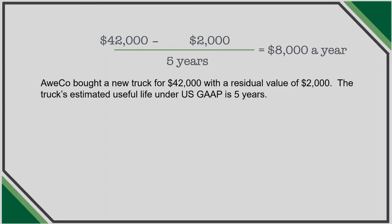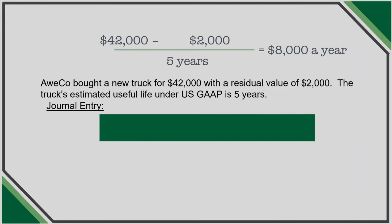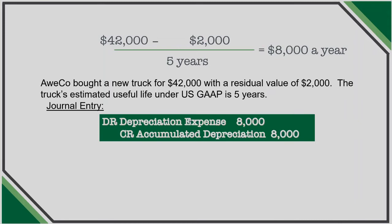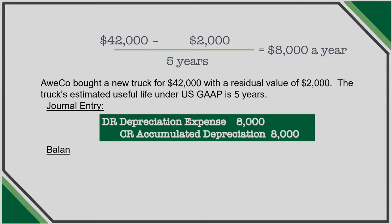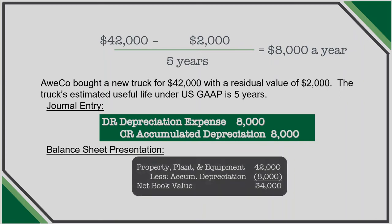The journal entry for depreciation is a debit to depreciation expense for $8,000 and a credit to accumulated depreciation for $8,000. The credit to accumulated depreciation is a contra account — it sits in the asset section of the balance sheet but reduces the asset value. The balance sheet presentation shows total property, plant and equipment of $42,000 less accumulated depreciation of $8,000 to get a net book value of $34,000.